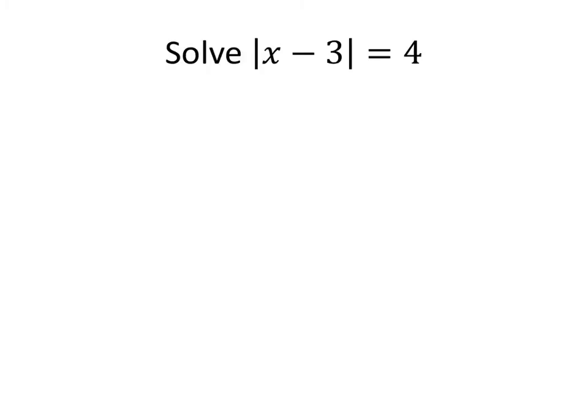What happens if there's something else inside the absolute values? We want to solve the equation the absolute value of x minus 3 equals 4. Just like before, there are two possibilities.